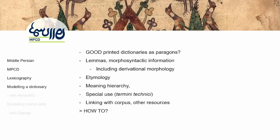So we started out looking at some of the good printed dictionaries, like the Oxford English Dictionary, the German dictionaries, or the Dictionary of Real Academia Española. We want lemmas, a lot of morphosyntactic information including verbal information, derivational morphology — because Middle Persian is very rich in derivational morphology and these derivations are not often transparent — etymology, meaning hierarchies, and a ton of termini technici in Middle Persian relating to religion and ritual use. And of course, we want to link the entire dictionary with our corpus and other resources.